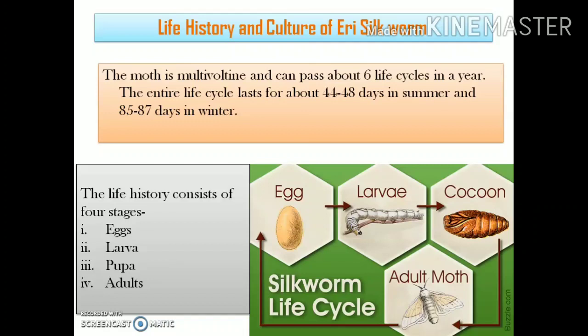The Eri silk moth is also a multivoltine species — having more than two generations or broods per year. The Eri silkworm can have about 6 life cycles per year. Their entire life cycle lasts about 85 to 87 days in winter and about 50 days in summer.